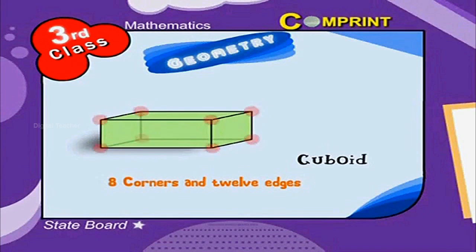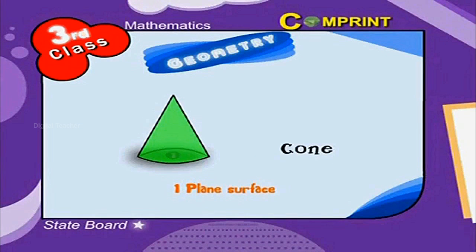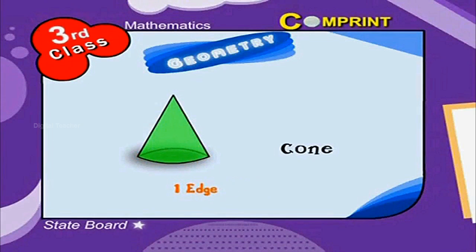Now let us see some more shapes. This is a cone. Number of plain surfaces is one. Number of curved faces is one. Number of corners is one. Number of edges is one.